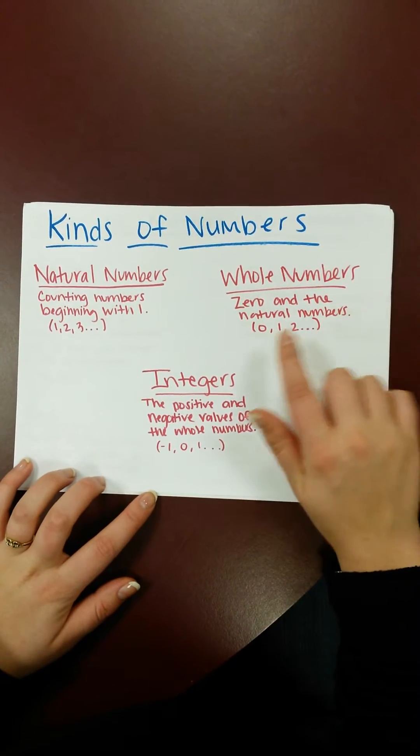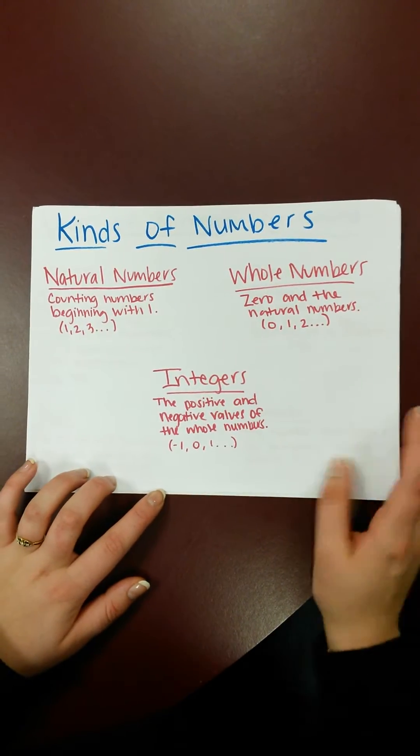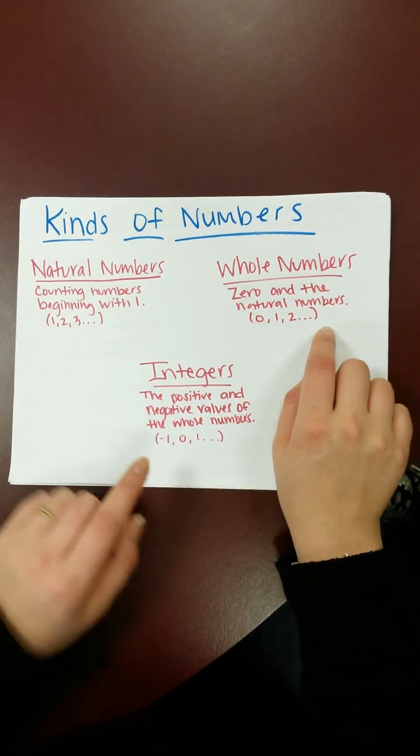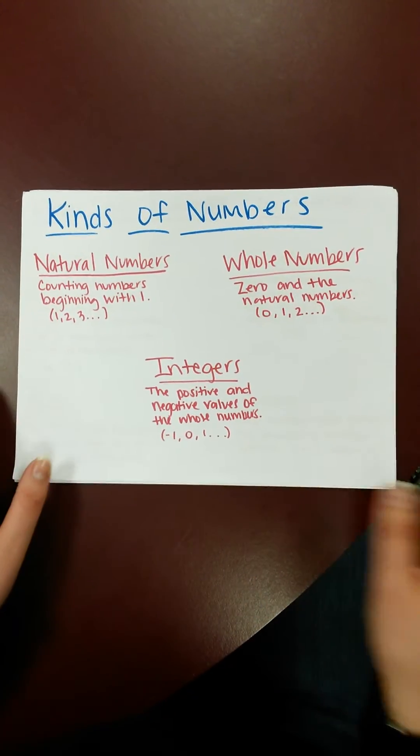Next one is whole numbers, and that's 0 and the natural numbers, so 0, 1, 2, and 3, and so on. And the integers is both of these, now adding the negative numbers, so any negative 0, 1, 2, and 3, and so forth.